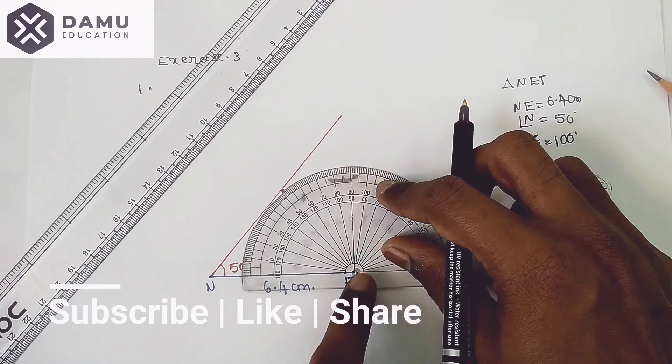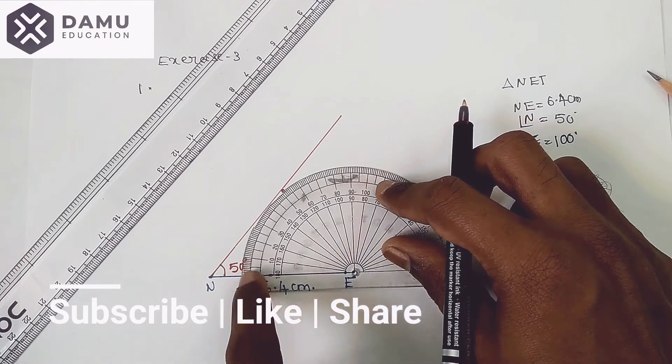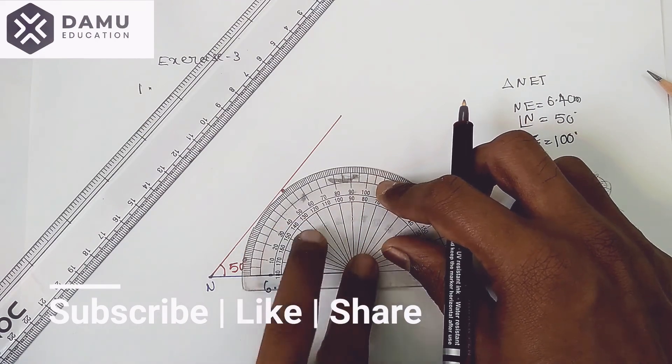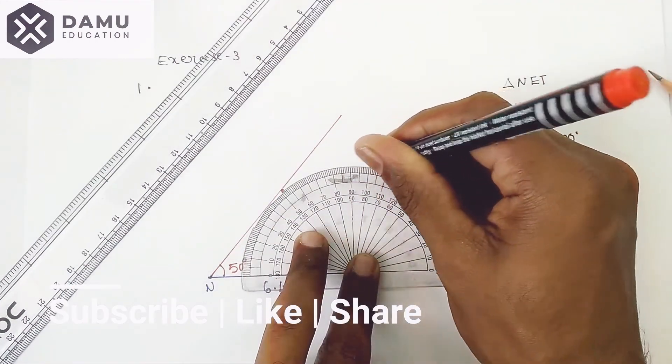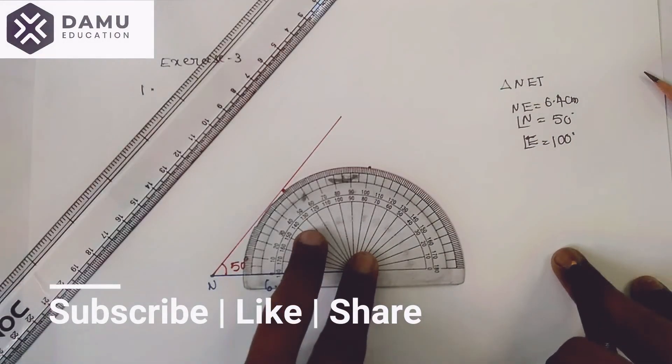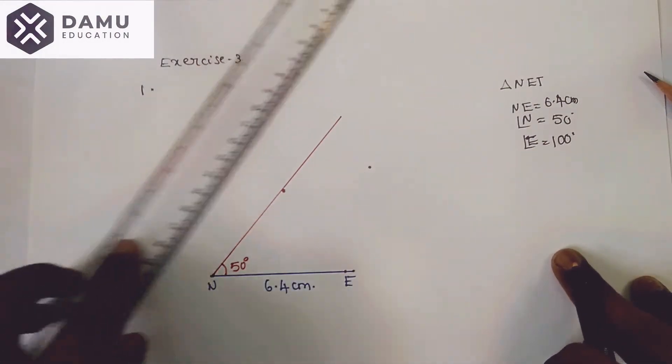We have to measure 100 degrees. From here take 0 degrees: 0, 10, 20, and continue like that. We'll get 100 degrees here. Draw one ray here.